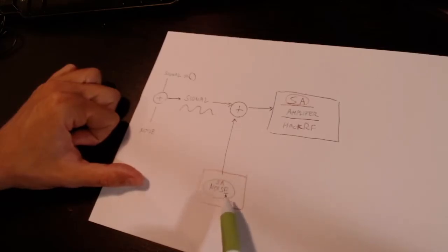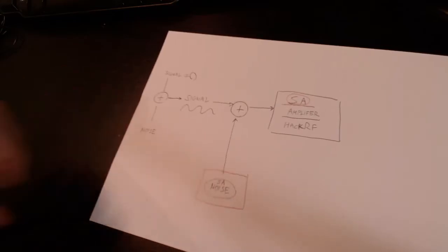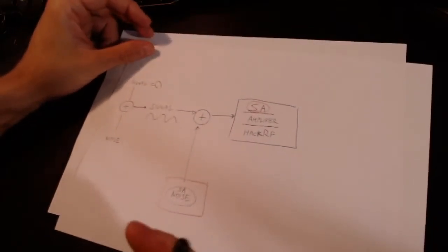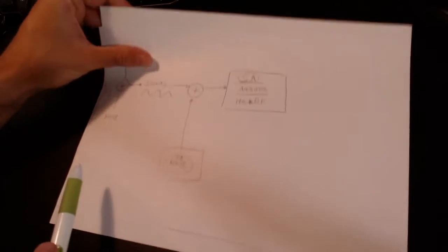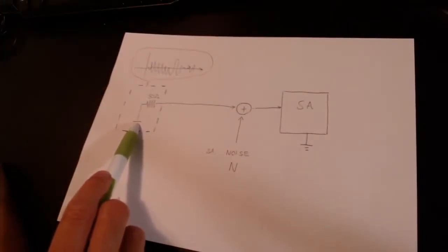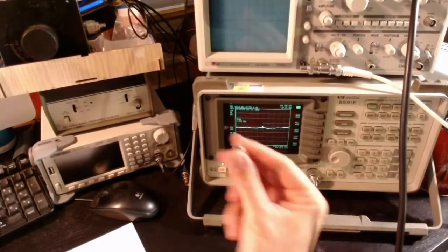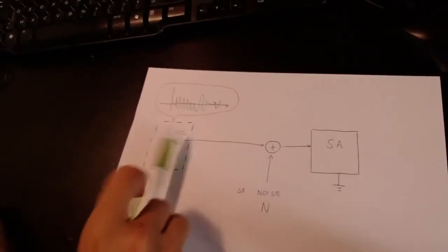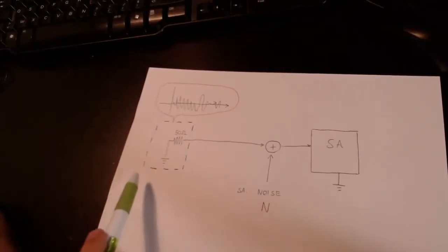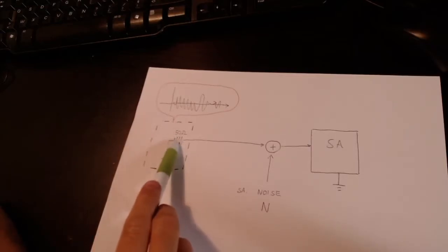How can we measure the strength of this internal noise? The basic idea is to prepare a setup where the signal and associated noise coming into the input are known. A convenient way to do this is to terminate the input of the spectrum analyzer with just a resistor — a 50-ohm resistor. Looking at my spectrum analyzer, this is exactly what I've done: there is a small dummy load, which is a 50-ohm resistor, plugged at the input.